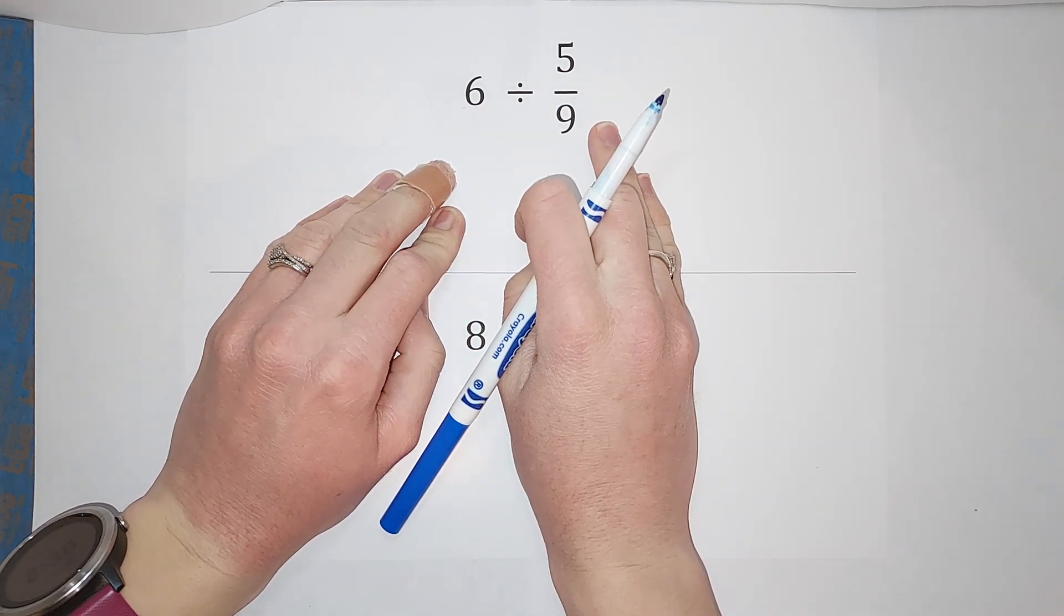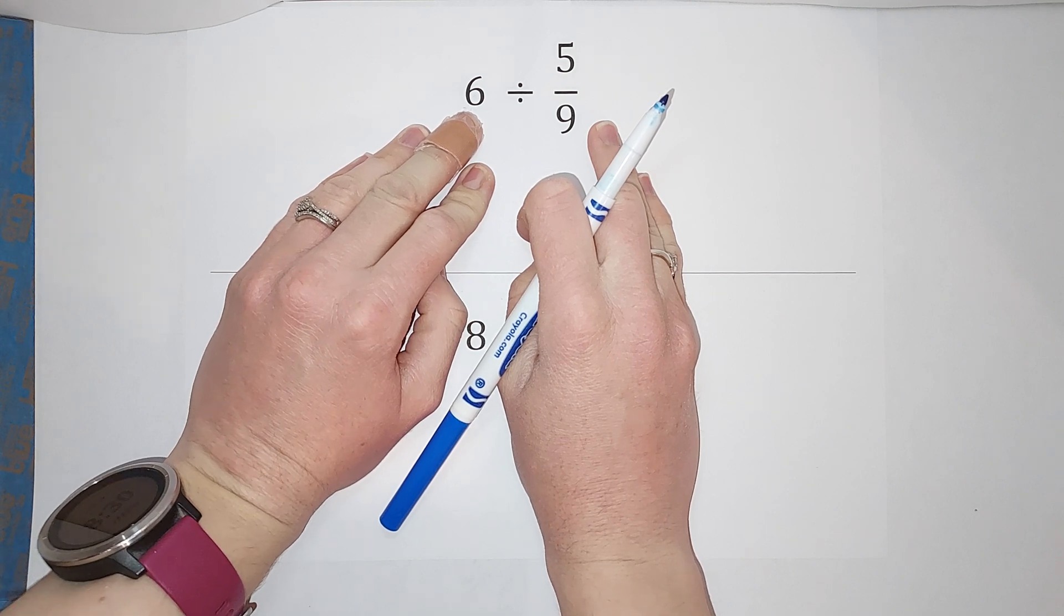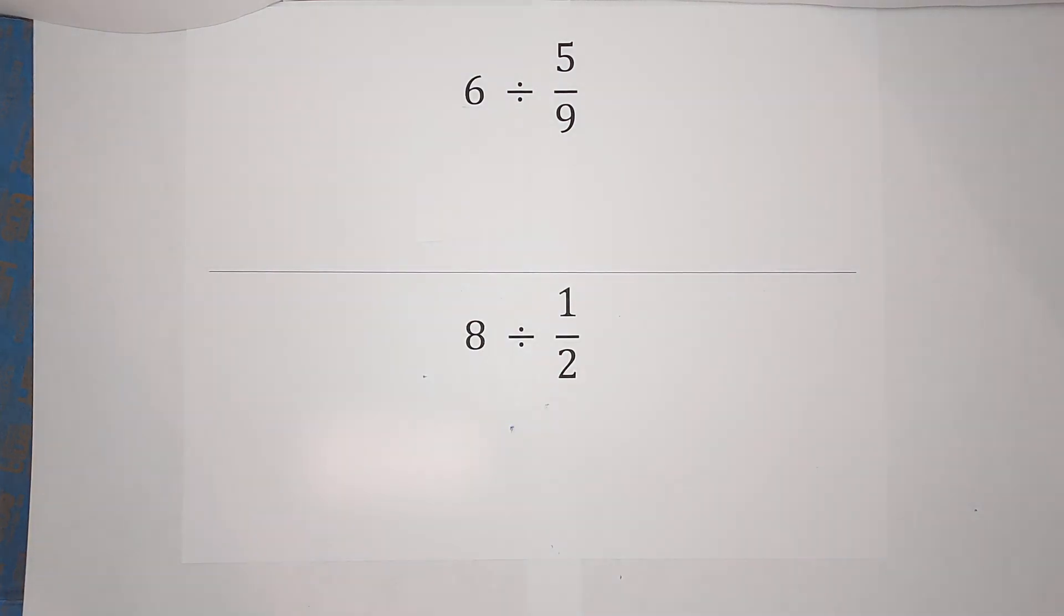That should be obvious, but I can turn any whole number into a fraction. I say that kind of funny because you're not actually turning it into a fraction—it is a fraction, it's just over one. Any number you have that doesn't look like a fraction, you just put it over a one. It's a very handy tool.